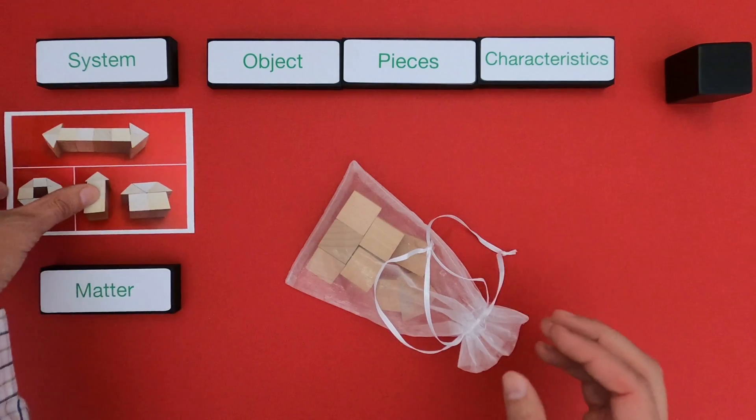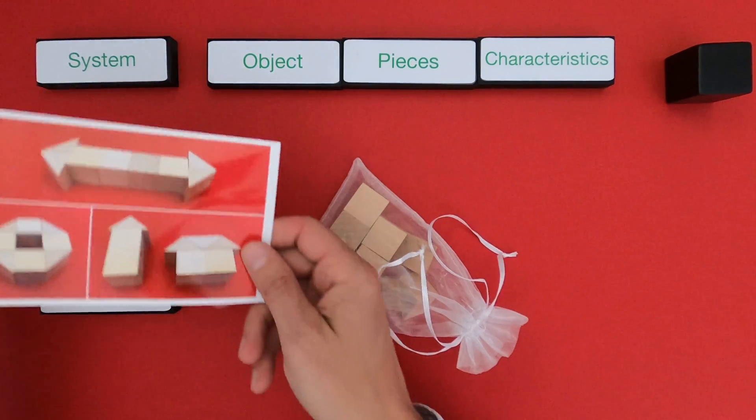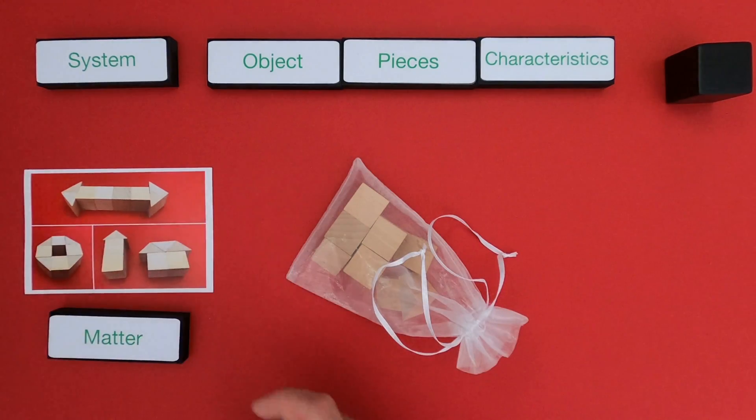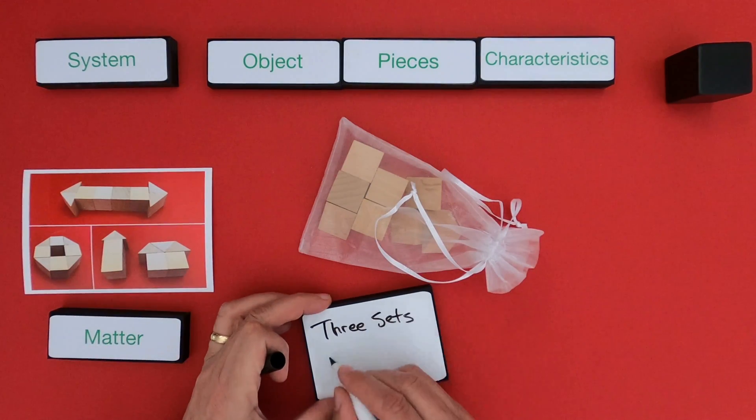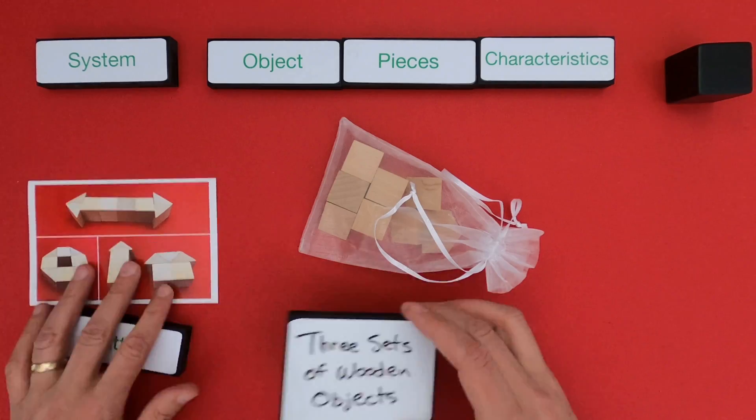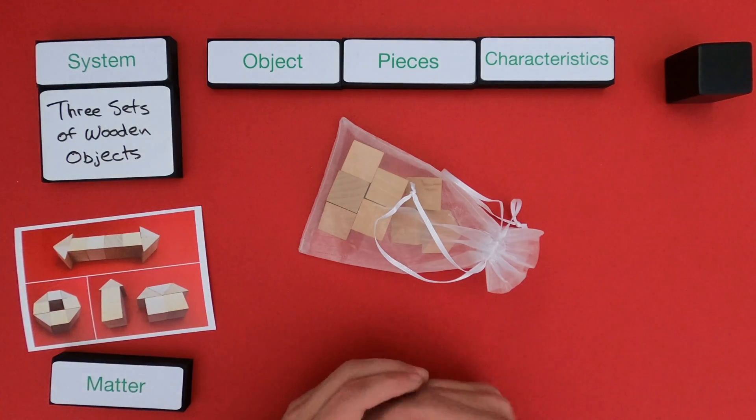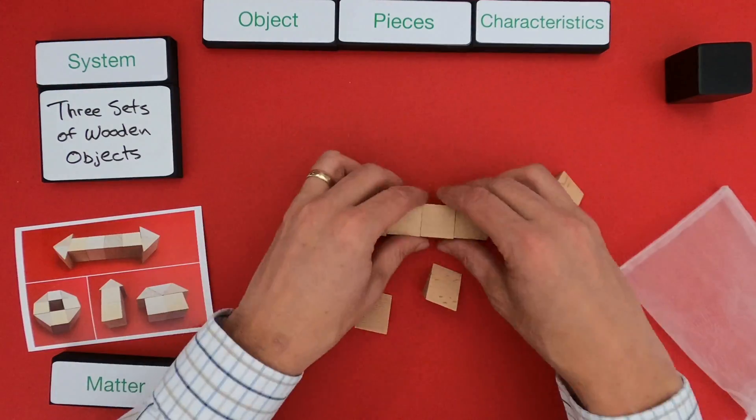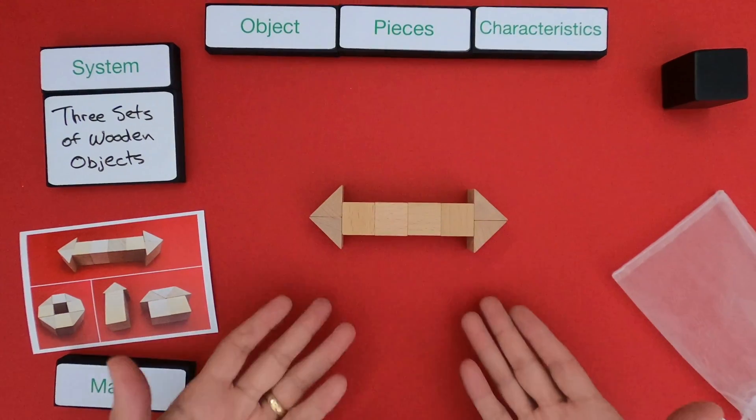The first thing I'm going to do is define the system that we're going to investigate, which are these three sets of wooden objects. And I'm going to build the first object in that set. So this is the first object.